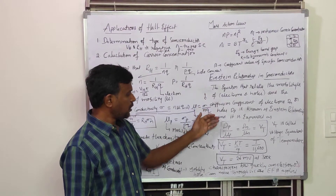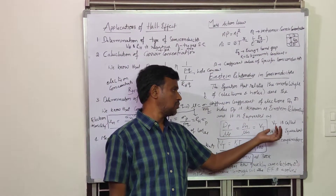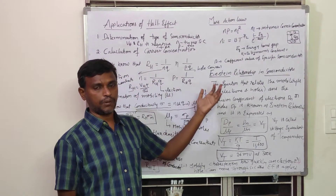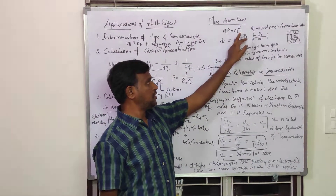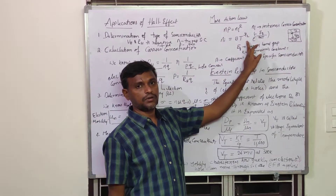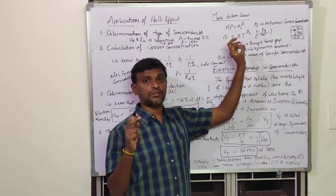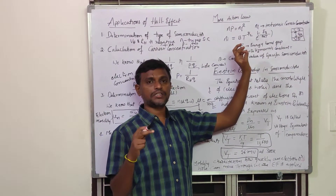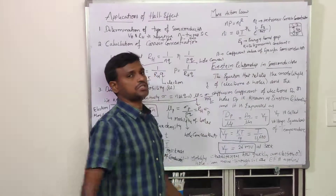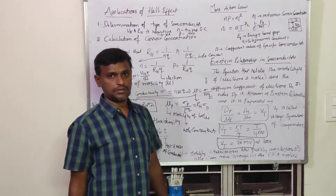To summarize: the Einstein relationship gives the relation between Dp, μp, Dn, and μn, all equal to VT. The intrinsic carrier concentration Ni varies with temperature — when temperature increases, electron-hole pairs are generated. This concludes our discussion on Hall effect applications, mass action law, and Einstein relationship in semiconductors. Thank you.